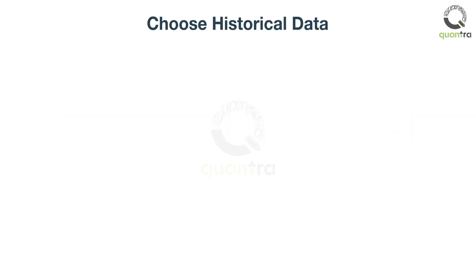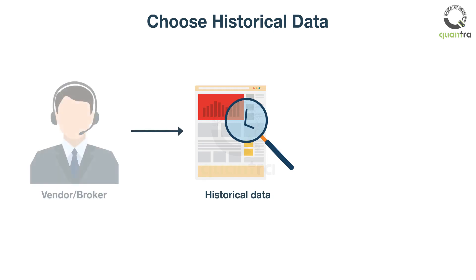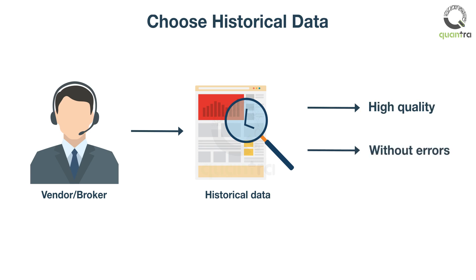Suppose you want to backtest your strategy. The first step would be to choose historical data. You can get this data from a data vendor or from your broker. It is important to select high quality data — that is, data without any errors.